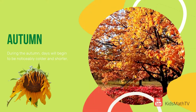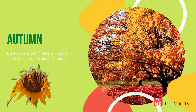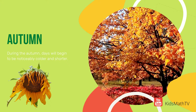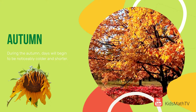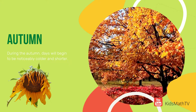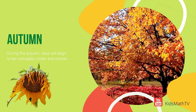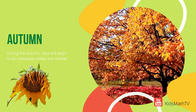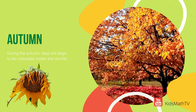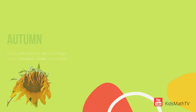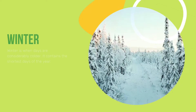During the autumn, days will begin to be noticeably colder and shorter. Plants that have completed their life cycle after bearing fruit in the summer will start to wither and trees will stop growing. Deciduous tree leaves will turn orange before they are shed.